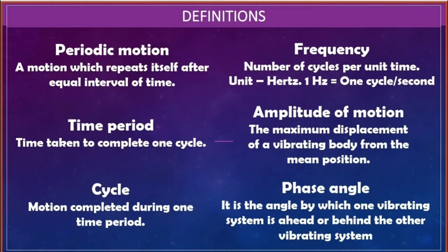Before going to the main topic, let us discuss some important definitions. First, periodic motion: periodic motion is defined as a motion which repeats itself after equal intervals of time. Second, time period: the time taken to complete one cycle is called time period. Third, cycle: the motion completed during one time period is called a cycle. Fourth, frequency: number of cycles per unit time is called frequency.